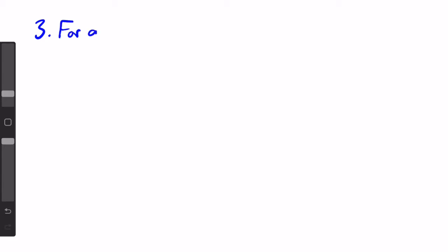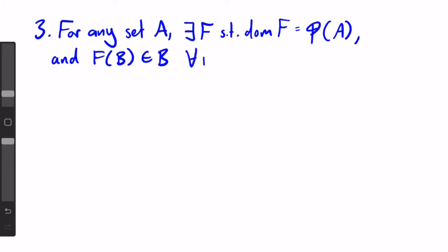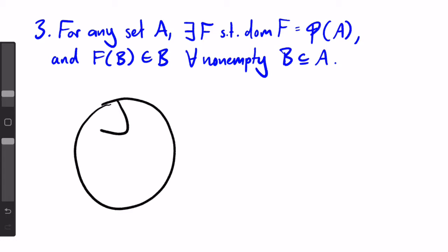Form three of the axiom of choice states, for any set a, there is a function f such that the domain of f is the set of non-empty subsets of a and such that f(b) is in b for every non-empty set b which is a subset of a. Again, a very long statement, but it's basically the exact same thing as form two, except instead of sets in the range of some function, the sets that we're choosing from are simply all the subsets of a.